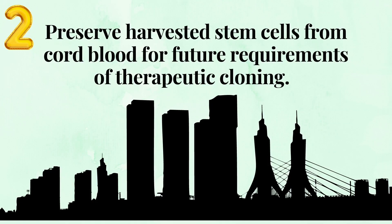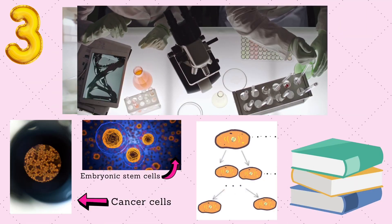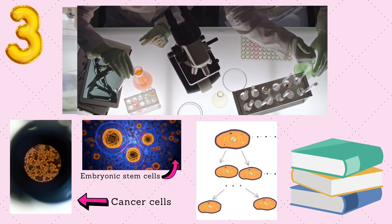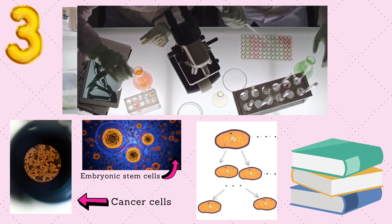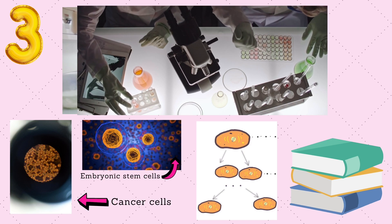Second, the somatic cells used for cloning do not possess the same attributes as newly developed stem cells. Adult somatic cells have been considered to counter this obstacle, however the outcome has been inconclusive. One of the best solutions could be to preserve harvested stem cells from cord blood for future requirements of therapeutic cloning to resolve this problem.